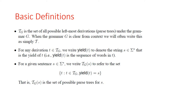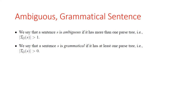Tg is the set of all possible leftmost derivations — parse trees — under grammar g. When the grammar g is clear from context, we'll often write this simply as T. For any derivation t from the set Tg, we write yield(t) to denote the string s from Σ*, i.e., yield(t) is the sequence of words in t. For a given sentence s, we write Tg(s) to refer to the set of t's where each t is from Tg and yield(t) equals s — that is, Tg(s) is the set of possible parse trees for s. We say a sentence s is ambiguous if |Tg(s)| > 1, and grammatical if |Tg(s)| > 0.